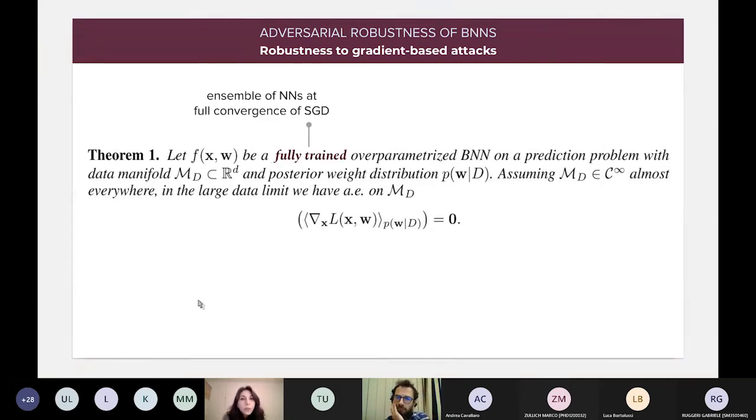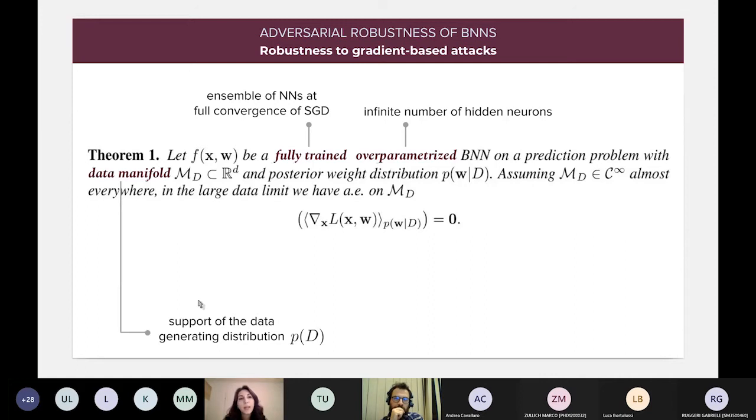So, by fully trained, we mean that all the deterministic neural networks in the ensemble are at full convergence of the SGD algorithm. By overparameterized, we mean that there is an infinite number of hidden neurons in each one of the layers of the BNN. Then the data manifold is simply the support of the data distribution, PD. And finally, by large data limit, we mean that we are supposing that our training data is infinite.